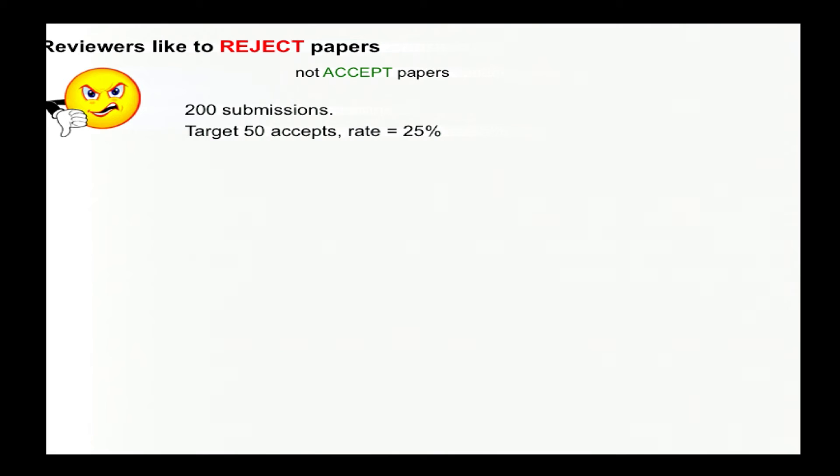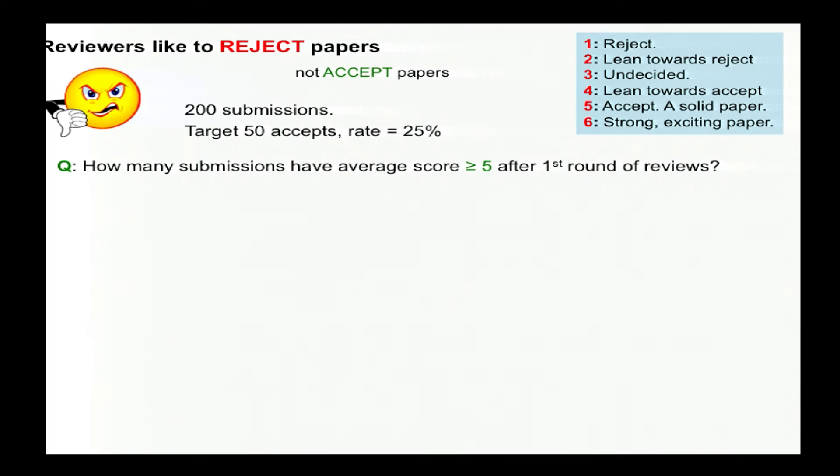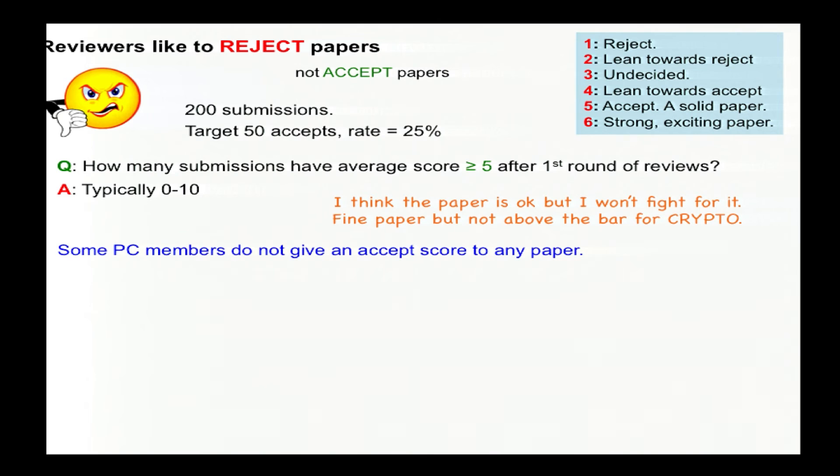Reviewers are depressingly negative. PCs routinely want to reject everything. Take a typical run of a process in which there may be about 200 submissions and we're targeting, say, 50 accepts. And as you know, each paper is given a score by each of three reviewers. The scores nowadays ranging from one to six with a five being an accept. So how many submissions do you think have an average score of accept at the end of the first round when all three reviewers have turned in their reports? Well, a naive outsider might say, well, perhaps 70 or 100, and then people have to argue to whittle it down. But you know that the real answer is more like, well, it can be zero. I've seen program committees like that. And it's rarely ever more than 10. So the program committee thinks only 5% of the papers are worth accepting.